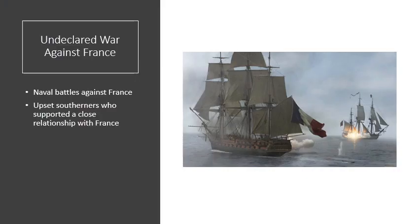Another thing upsetting people about the Federalist Party was their foreign policy against France. In the years between 1798 and 1800, during the French Revolutionary Wars, French ships were seizing American vessels in the Atlantic. John Adams, the Federalist president, authorized the American Navy to fire on French ships rather than use diplomatic means, essentially creating an undeclared naval war for about two and a half years. This really upset Southerners who supported a close relationship with France — America's ally during the Revolutionary War and a major trading partner for Southern goods like cotton and tobacco.